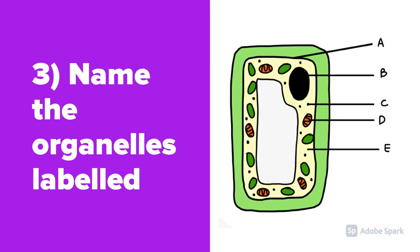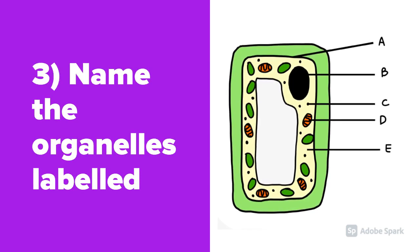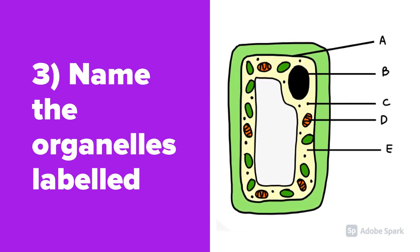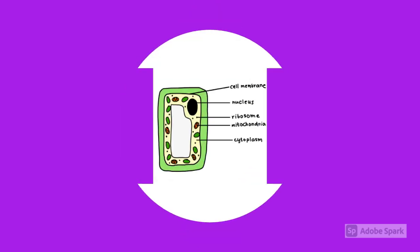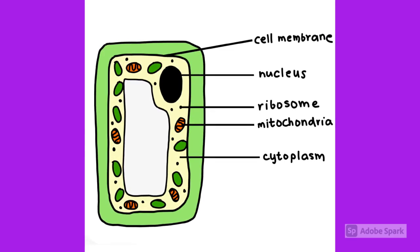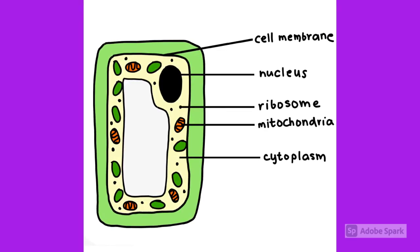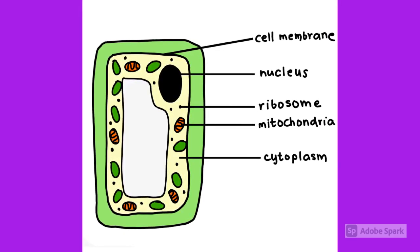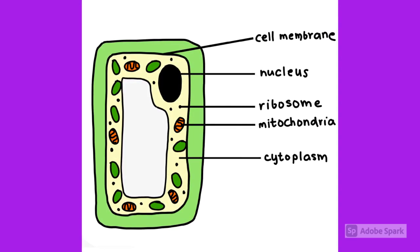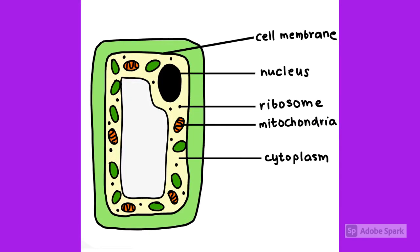Question number 3: Name the organelles labeled in the picture. They are cell membrane, nucleus, ribosome, mitochondria, and cytoplasm.